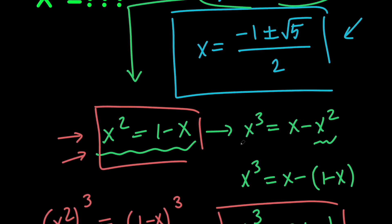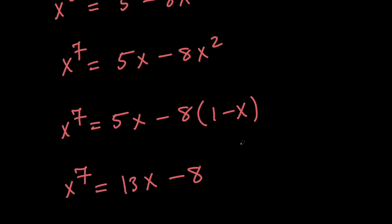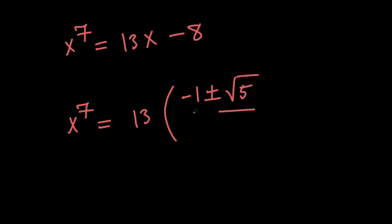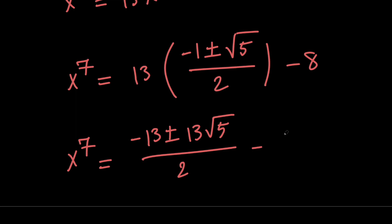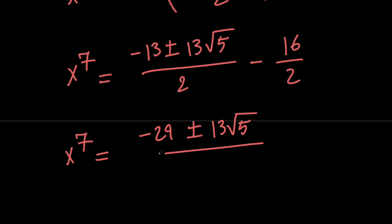Now, remember that we found x to be negative 1 plus or minus root 5 divided by 2, which means that x to the power of 7 equals 13 times the quantity negative 1 plus or minus root 5 all divided by 2 minus 8. Let's simplify this: x to the power of 7 equals negative 13 plus or minus 13 times root 5 all divided by 2 minus 16 over 2, which means that x to the power of 7 equals negative 29 plus or minus 13 times root 5 all divided by 2.